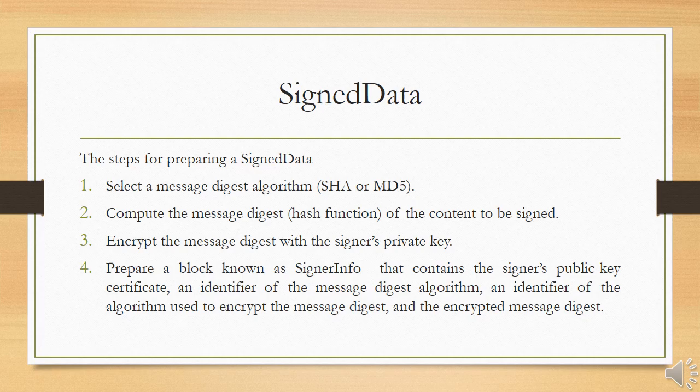The signed data S/MIME type can be used with one or more signers. For clarity, we confine the description to the case of a single digital signature. The steps for preparing the signed data MIME entity are: select a message digest algorithm — either SHA or MD5; compute the message digest, that is, the hash of the content to be signed; encrypt the message digest with the signer's private key; and prepare a block known as SignerInfo that contains the signer's public key certificate, an identifier of the message digest algorithm, an identifier of the algorithm used for encryption of the message digest, and the encrypted message digest.